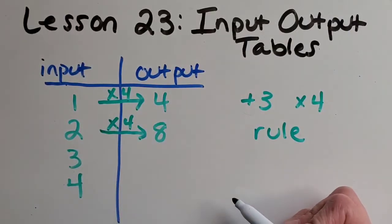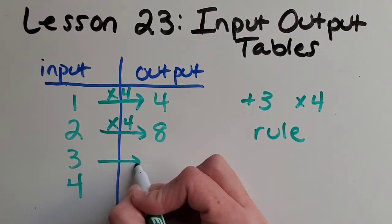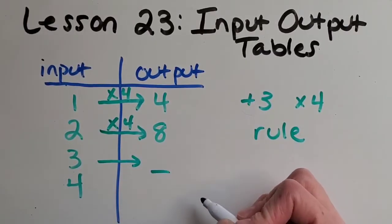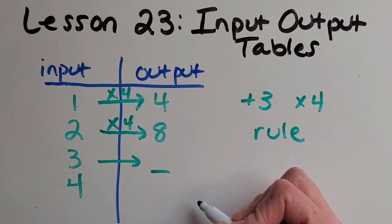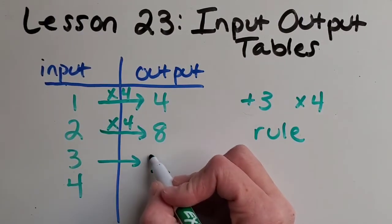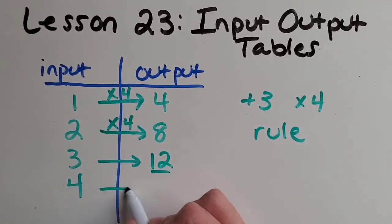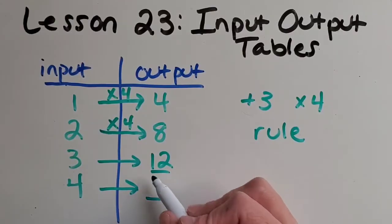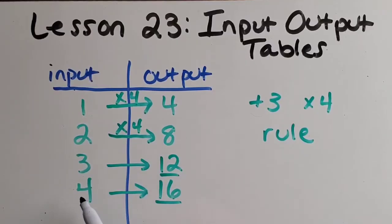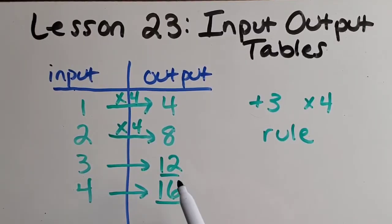Now, what do you think we should put here for the output? Good. Three times four is twelve. What do you think we should put here for the output? Great. Sixteen. So four wood blocks will give us sixteen planks.